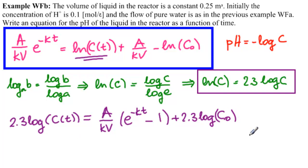Make sure you check your signs because otherwise it doesn't work really well. So now what we really want is minus log of C. So we're going to divide by 2.3 and multiply by minus 1. So pH of T equals minus log of C of T. Now to get that minus log, we're dividing by 2.3 and multiplying by minus 1. So we have A over 2.3 KV.